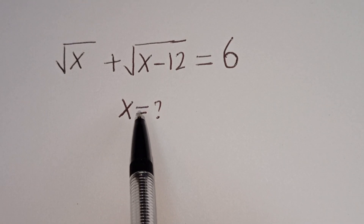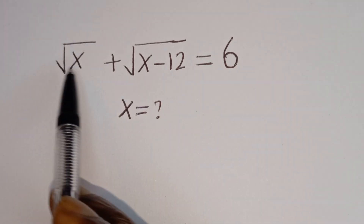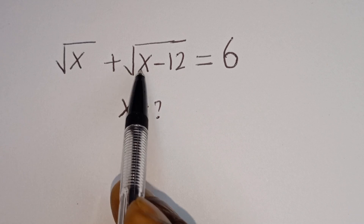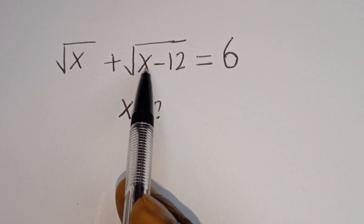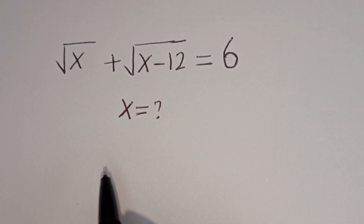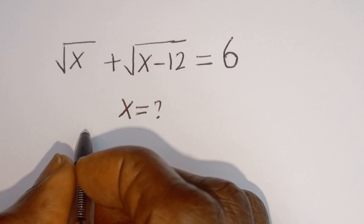Hello. How to solve for x in this equation: square root of x plus square root of x minus 12 is equal to 6.